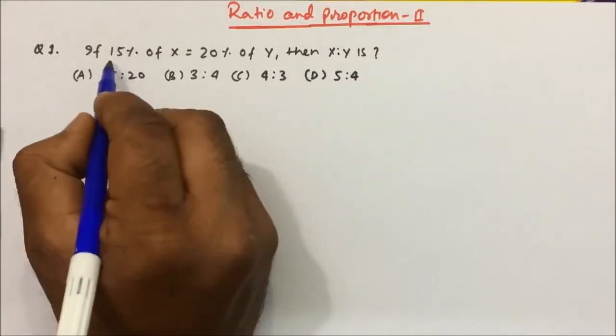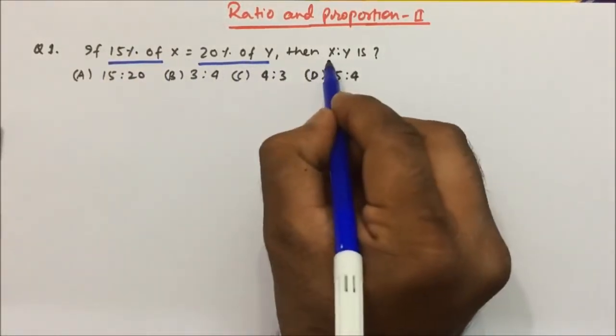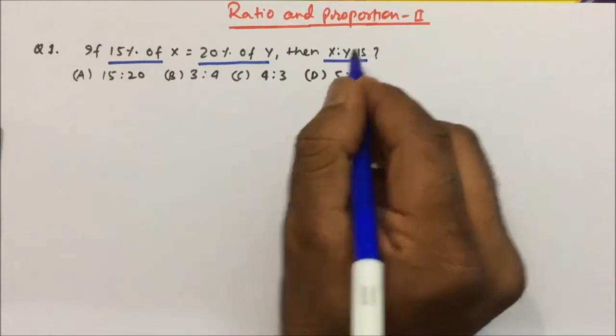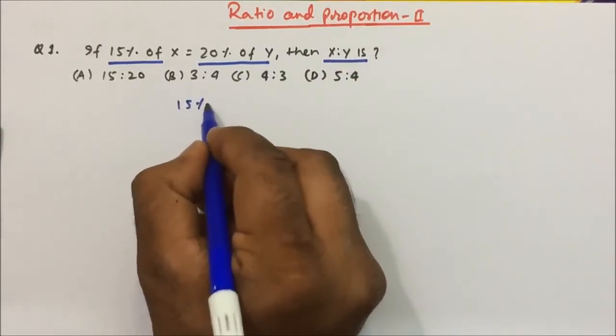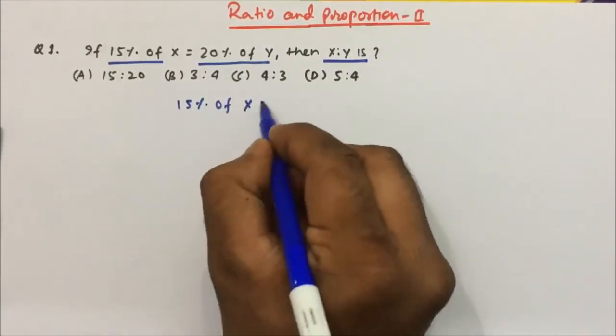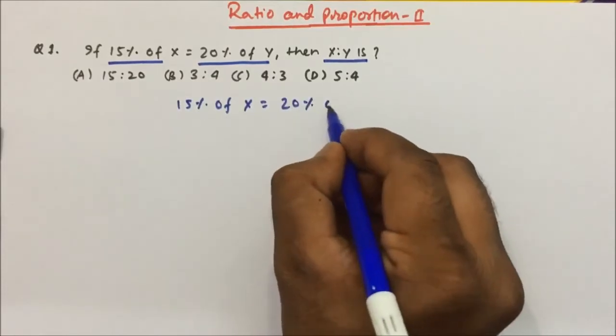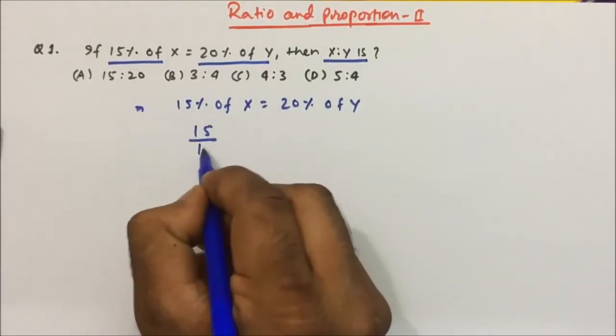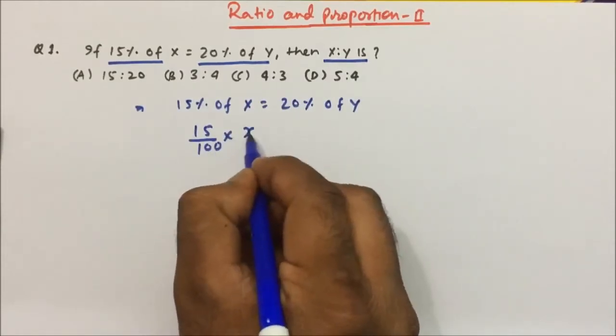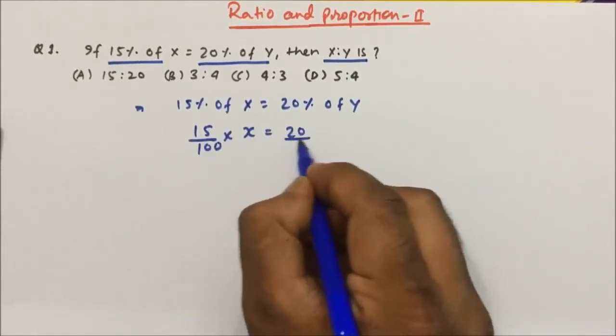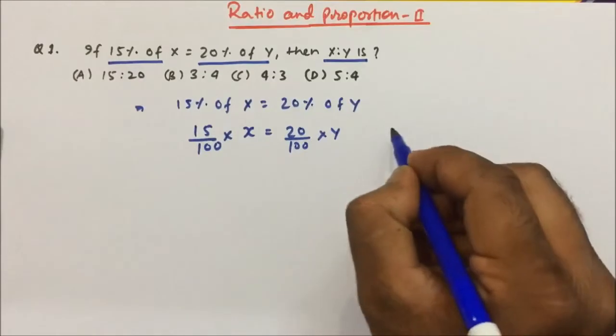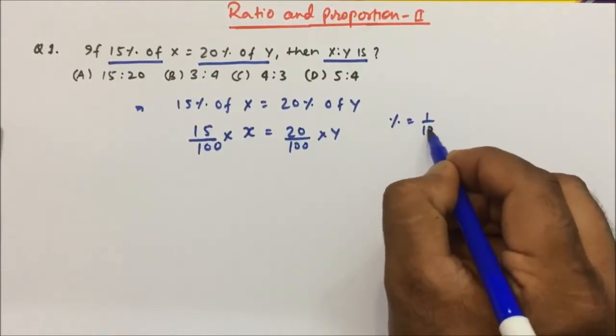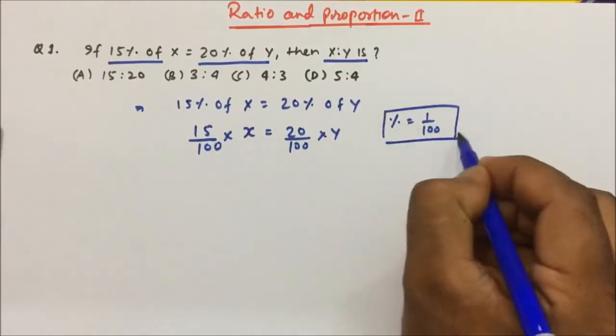So if 15% of x is equal to 20% of y, then you have to find out the ratio of x is to y. Now this we can write as 15 by 100 into x equals 20 by 100 into y, because percentage will be equal to 1 by 100.